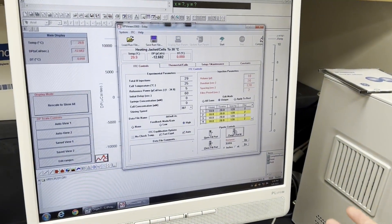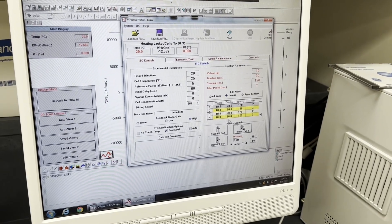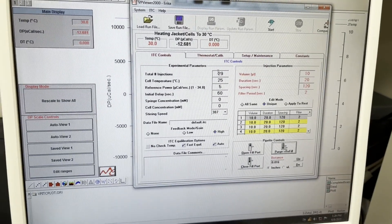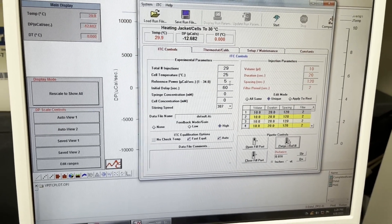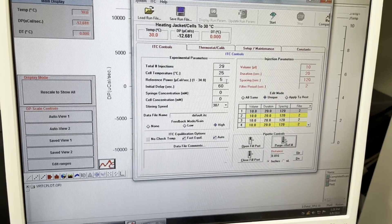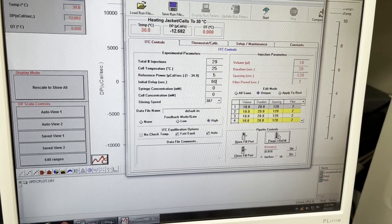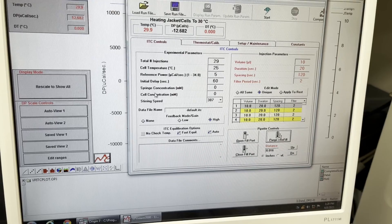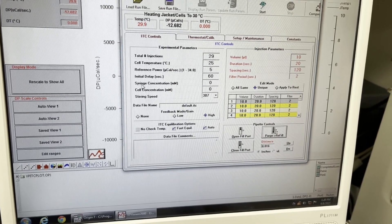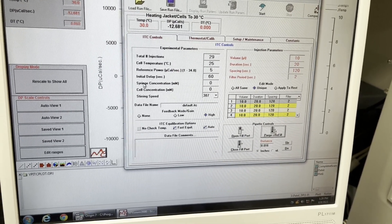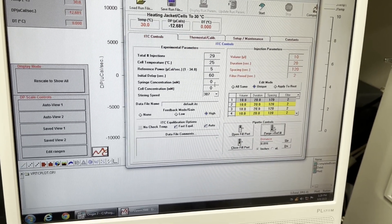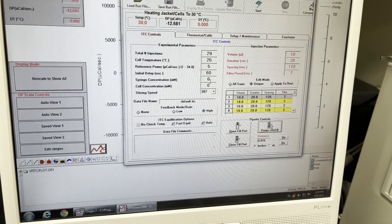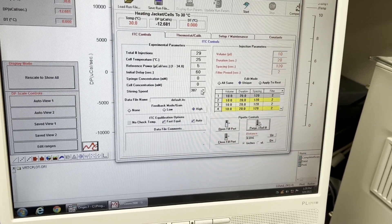Then you want to come to the computer and here it's really dependent on your experiment. You can change the total number of injections, the temperature. I usually don't mess with the reference power, it's calibrated pretty nicely, or the initial delay before injection. What is very important for ITC is knowing the exact concentration of your sample in the syringe and your exact concentration of your sample in the cell. So you can input these. You can adjust the stirring speed if you would like.